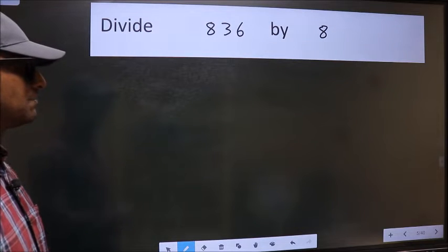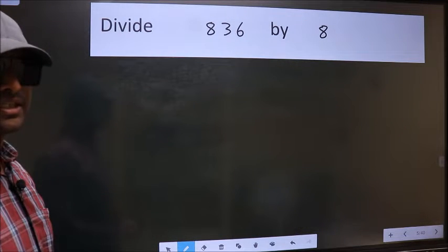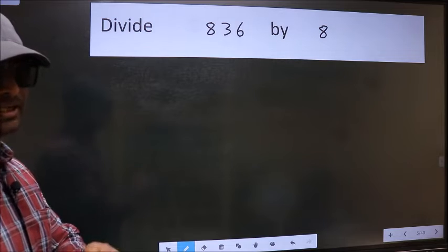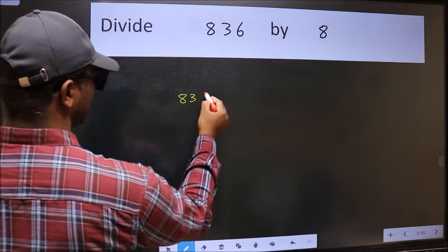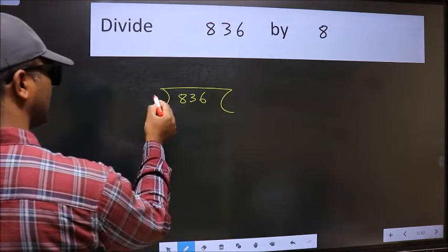Divide 836 by 8. To do this division, we should frame it in this way. 836 here and 8 here.